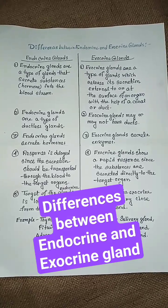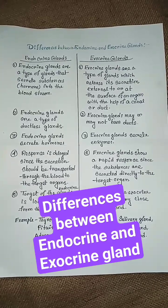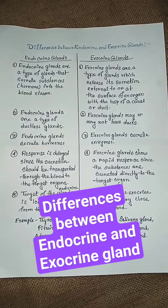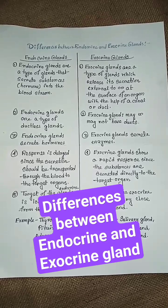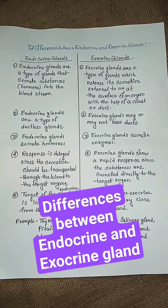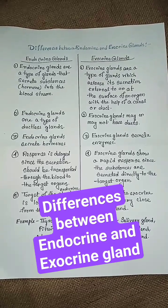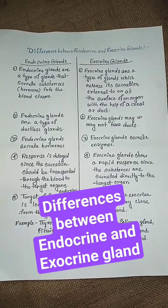Differences between endocrine and exocrine glands. Endocrine glands are a type of glands that secrete substances into the bloodstream.